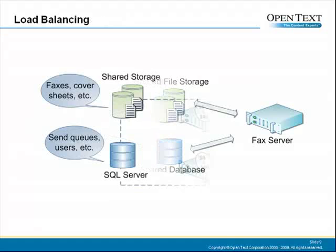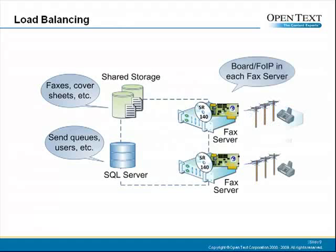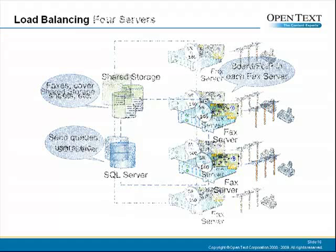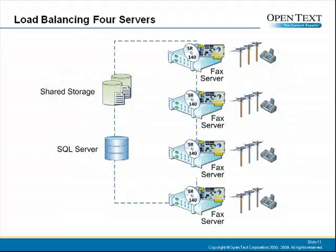If each server using the Shared Services module has a FACTS board or FACTS over IP software, it might look something like you see in this diagram. Because both servers are picking up jobs from shared work queues, they load balance evenly without special configuration. If a third and fourth server are added, the load is balanced even more widely.